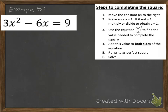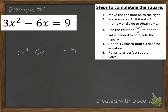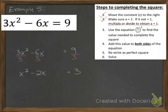Example 5 is different — the constant is already on the right-hand side, but a is not 1; it is 3. So we need to divide everything by 3 — left side and right side. 3 divided by 3 is 1, negative 6 divided by 3 is negative 2, and 9 divided by 3 is 3. Since a was not 1, we scaled everything by dividing by 3, and now a is 1. Now we can use b over 2 as usual.